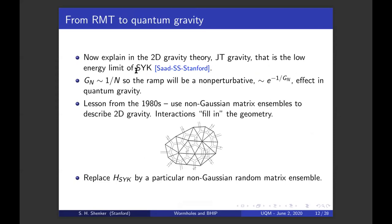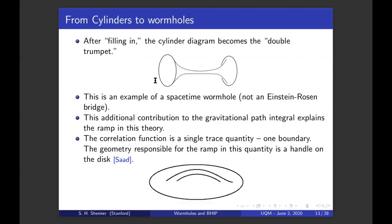Now explain in 2D gravity theory. As we know, the low energy limit of SYK is described by a 2D gravity theory called Jackiw-Teitelboim gravity. Now G Newton is order one over N, so the ramp has to be non-perturbative and e to the minus one over G Newton effect. It's going to have to be a non-trivial configuration in geometry. Now there's a lesson from the 1980s that you can describe two-dimensional quantum gravity using non-Gaussian random matrix ensembles, like with a trace m cubed or a trace m fourth. These things make Feynman diagrams with interactions like this little cubic diagram in here. If you take the dual graph, this makes triangles, and you've triangulated a random surface. These interactions fill in a geometry.